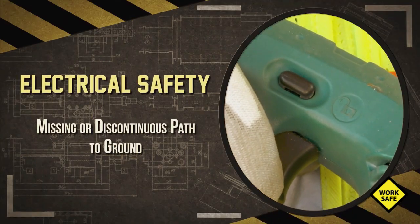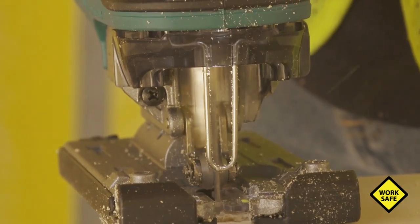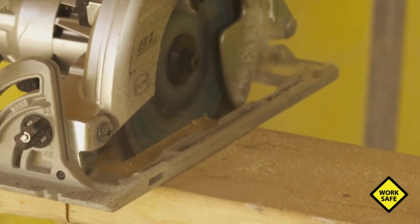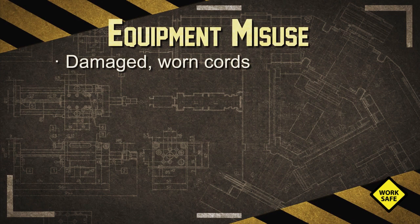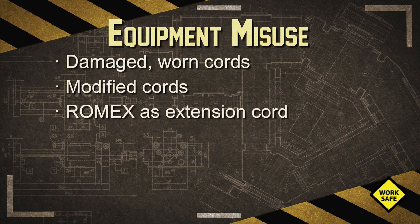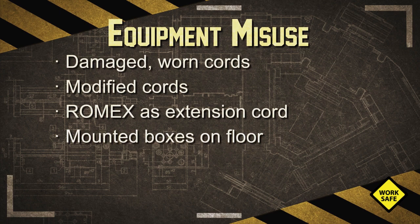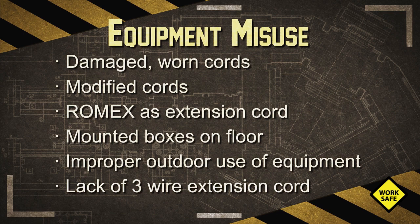Most electrical tools and equipment have safety features built into them by the manufacturer. However, if used in ways not intended by the manufacturer, operators no longer rely on these features. Examples of misuse include: using electrical cords or tools with worn or damaged insulation and exposed wires, using modified cords or tools missing faceplates, ground prongs, or insulation, fabricating extension cords with Romex wire, using junction boxes designed to be mounted with a power cord and placing them on the floor, using electrical equipment outdoors that is only designed for indoor use, and not using three-wire extension cords designed for hard or junior hard service typical for construction usage.